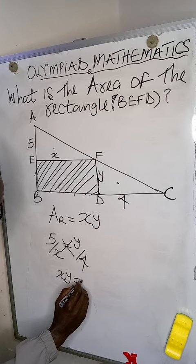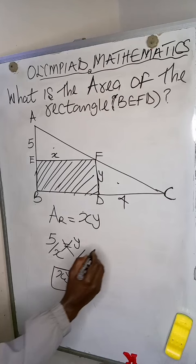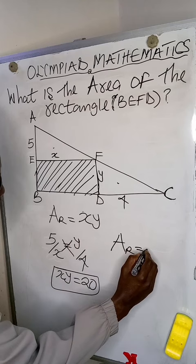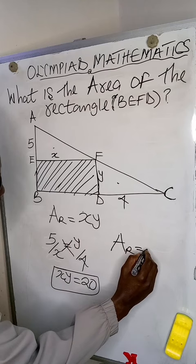That is what the similar triangle will give us. So the area of the rectangle AR will be equal to xy, which is equal to 20. So you see, very easy or tactical. That is what Olympiad exam question looks like.